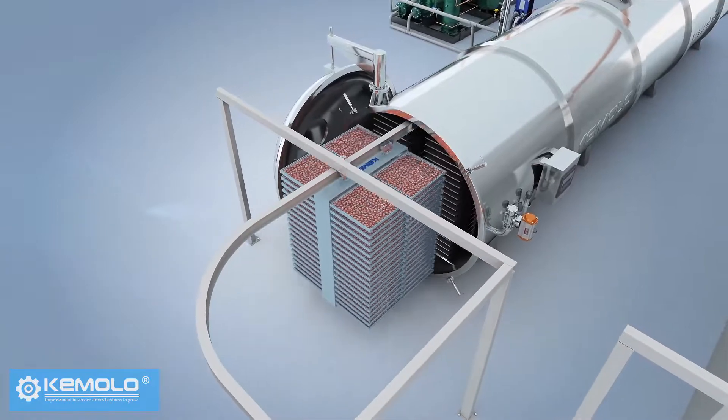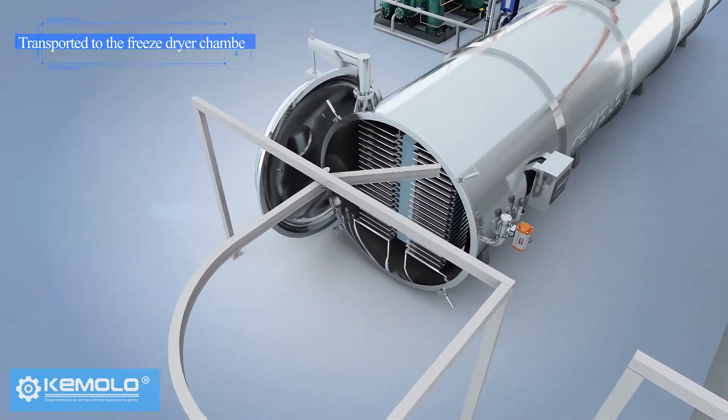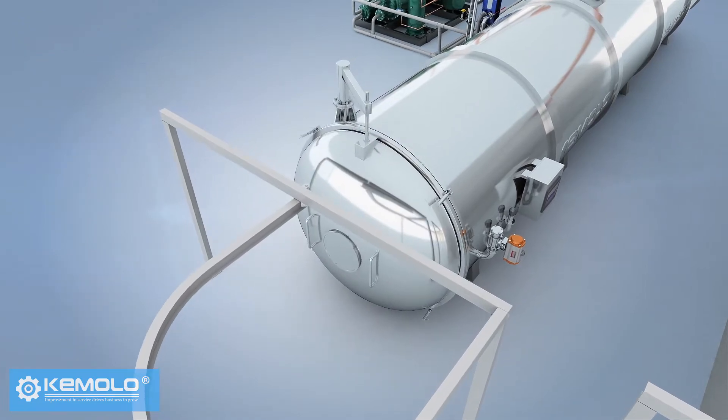The frozen material is then transported to the freeze dryer chamber. The chamber is closed and it is ready to freeze dry.